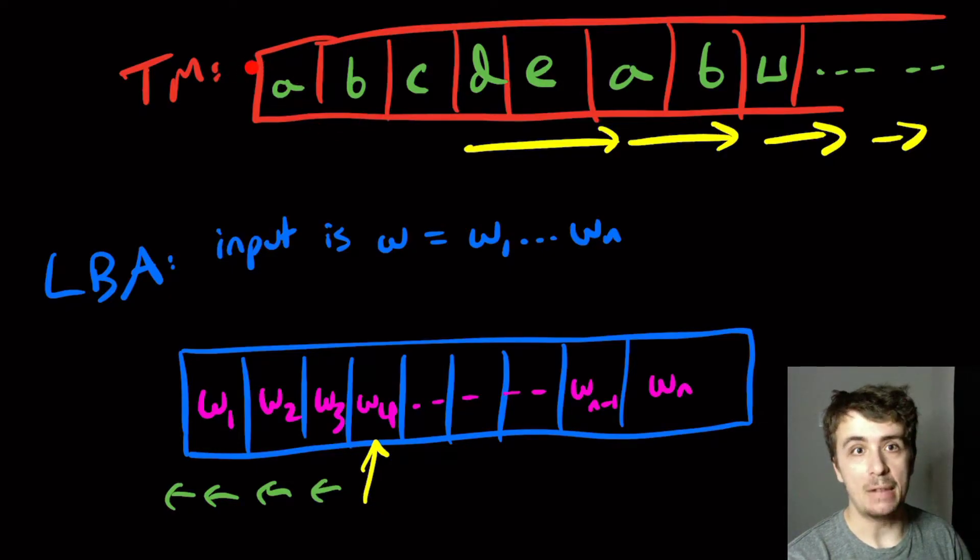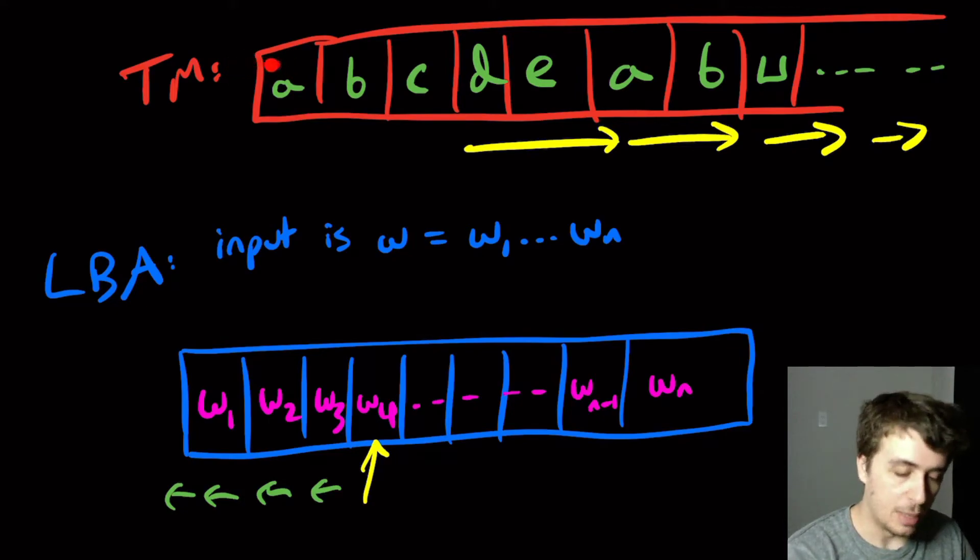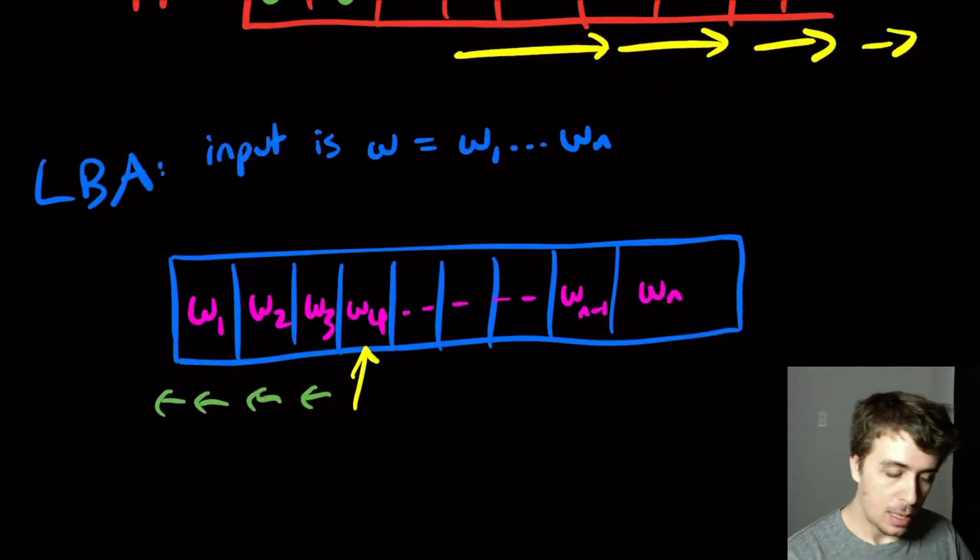In the Turing machine world, if we're in the leftmost cell and we try to move left, then the machine will stop at that point because effectively we don't know what it's trying to do. It's doing wrong behavior, trying to access something that doesn't exist. And in this world...